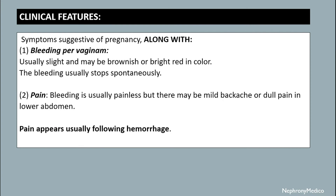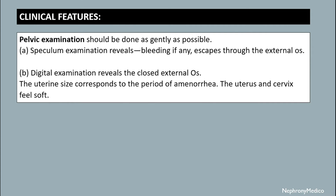Clinical features include symptoms suggestive of pregnancy along with bleeding per vaginum and pain. Pain usually appears following hemorrhage. Pelvic examination should be done as gently as possible. Speculum examination reveals bleeding, if any, escaping through the external OS. Digital examination reveals a closed external OS and the uterine size corresponds to the period of amenorrhea.